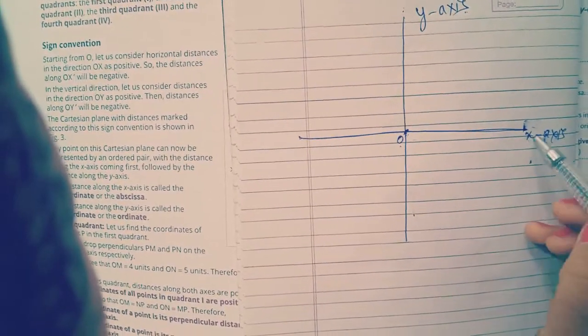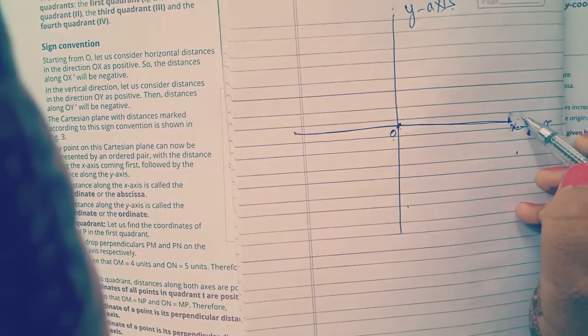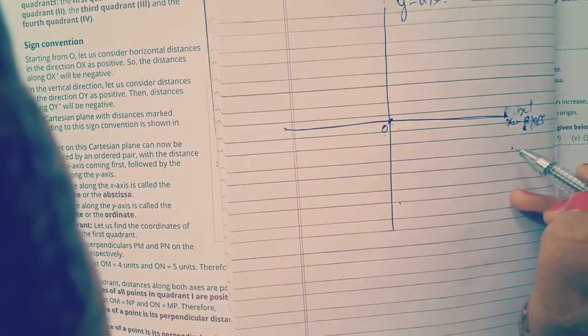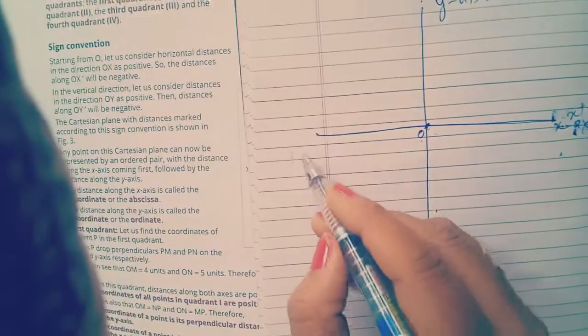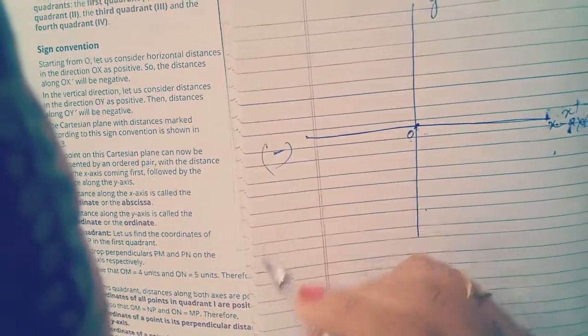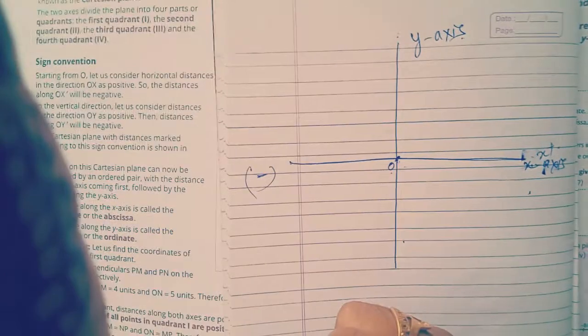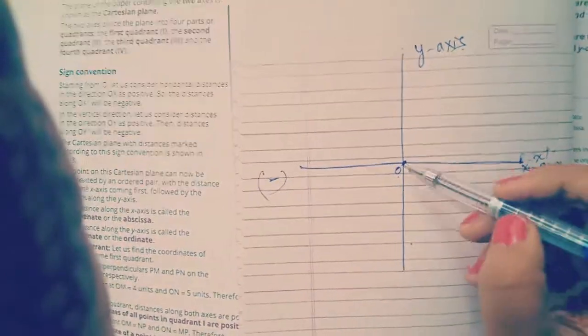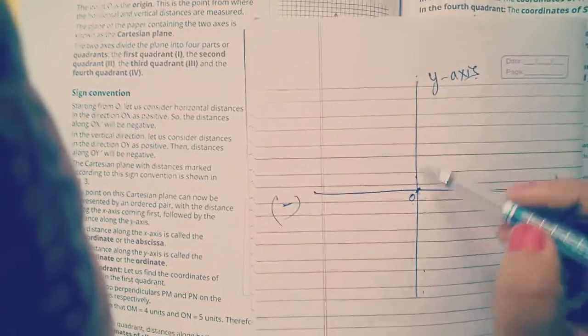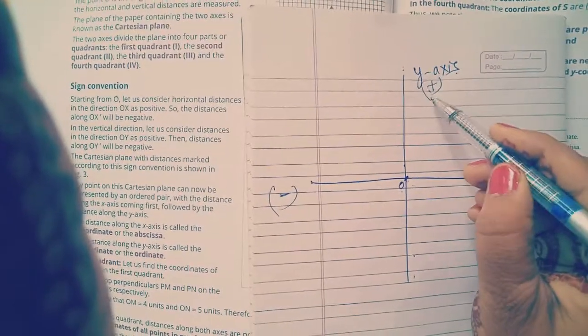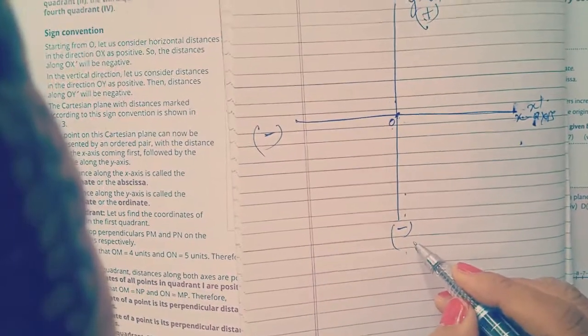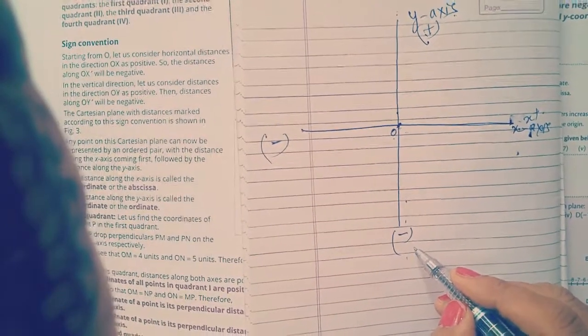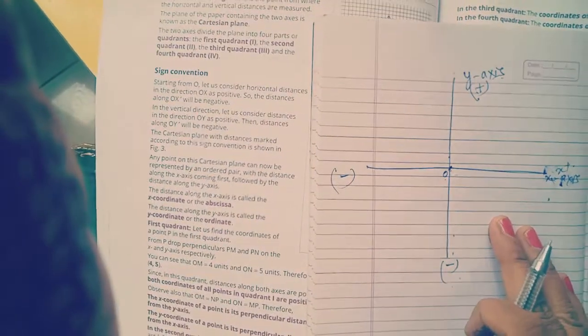So on the right hand side, we will take positive values of x. We will take the positive value of x. And on the left hand side, we will take negative value of x. And for this vertical line, upper side, we will take the positive value. And downwards, we will take negative value of y. This is very important. So this is the coordinate system.